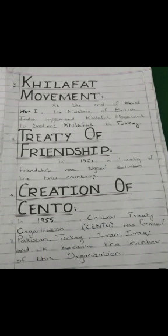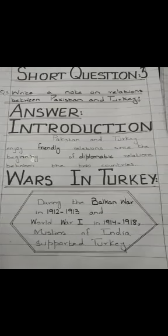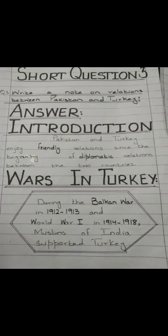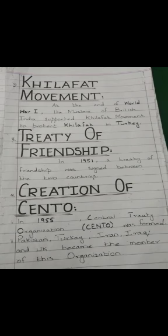The fourth heading is Creation of CENTO. In 1955, the Central Treaty Organization, CENTO, was formed, where Pakistan, Turkey, Iran, Iraq, and the UK became members of this organization. So give 10 minutes to these five headings: Introduction, Wars in Turkey, Khilafat Movement, Treaty of Friendship, and Creation of CENTO.